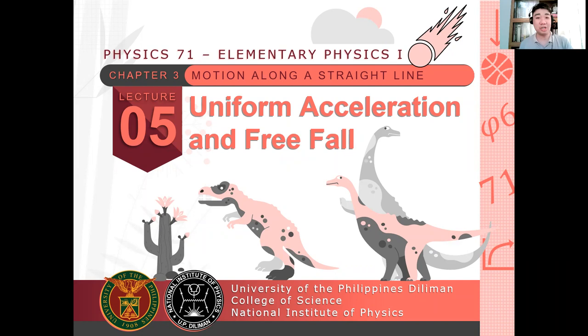Yesterday, we discussed the position-time graph, velocity-time graph, and acceleration-time graph. And we predicted or we deduced the quantities or the behavior of the motion of a particle in one dimension based on these graphs. By just looking at the graph and having some values, you can predict whether the particle starts slowly or increases its speed, speeds up or slows down. That's what we did yesterday.